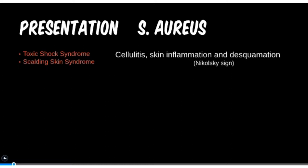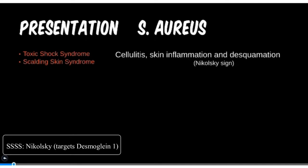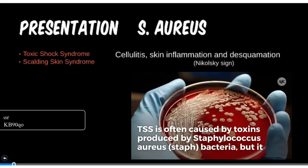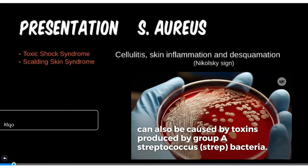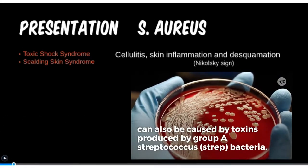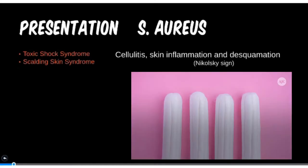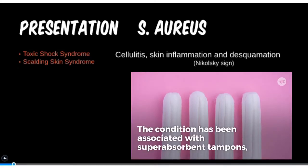TSS is associated with fever, hypotension, and often female menstrual cycles due to prolonged tampon use — that's a classic vignette question for this disease. Toxic shock syndrome toxin (TSS toxin) is responsible for the majority of TSS cases, although a few other toxins can cause it in rare instances. Staph scalded skin syndrome is more commonly associated with child infections and has a positive Nikolski sign, while TSS is Nikolski negative.